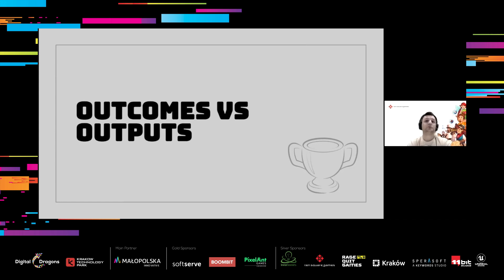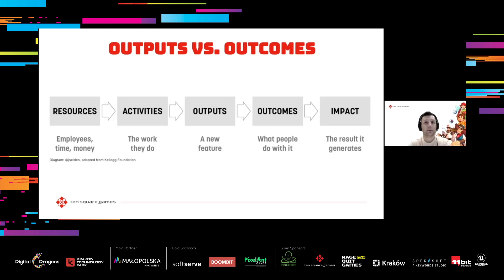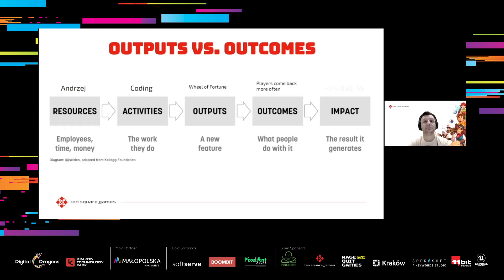Finally, we're getting close to the point of the talk — outputs versus outcomes. Here's an example: Andrzej is a programmer who creates a popular mobile game feature — the wheel of fortune. Because of this, players come back to the game more often, which in turn affects our KPIs. Looks pretty solid, right? However, in this scenario the output is our phase one and the impact is phase three. The outcomes are sort of implied — we hope that players will do what we need them to do because of our feature.